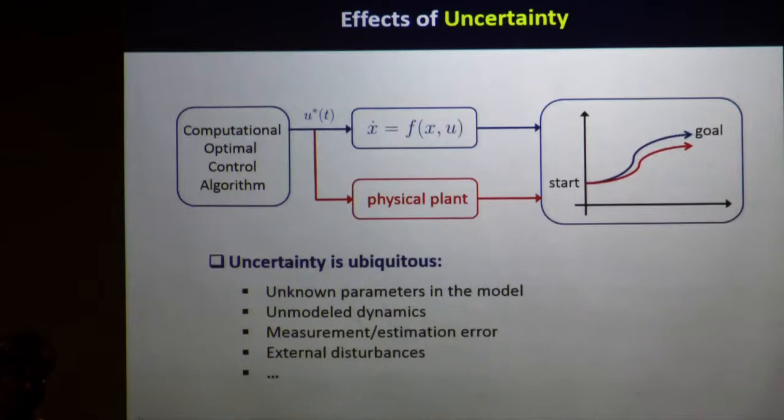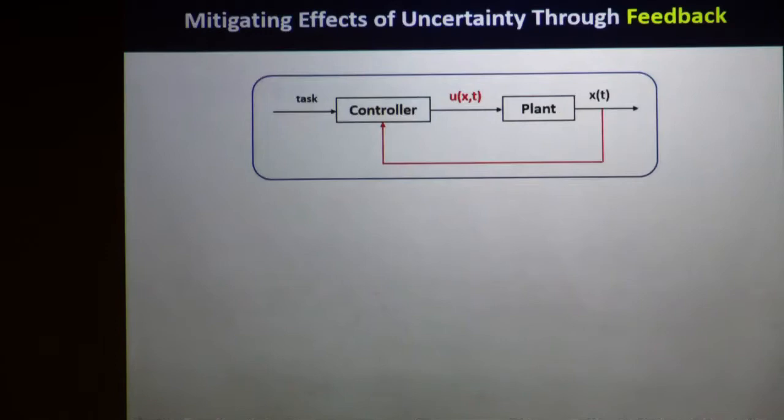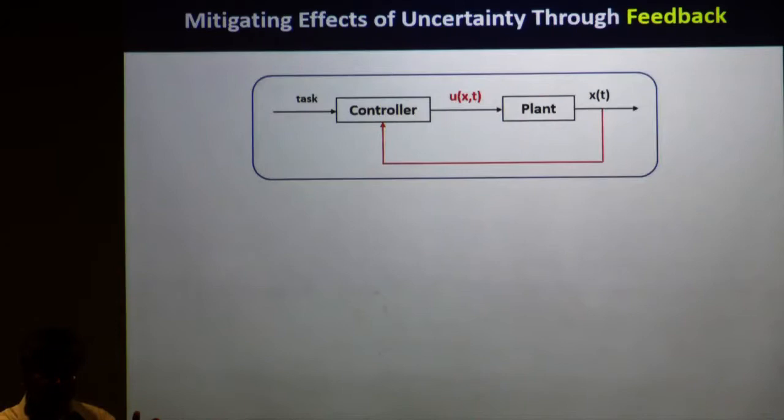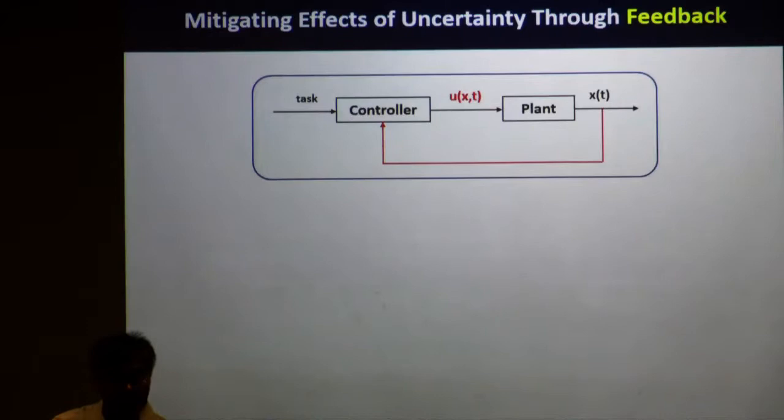From a control perspective, how do we mitigate this uncertainty? Since uncertainty is ubiquitous in any control system, the standard answer is to use feedback. Feedback basically means that at any time moment, you measure the state variable, and as your state deviates from your planned trajectory, you generate a new control signal. So your control signal is based on the current state variable — this is feedback, and it provides robustness to small disturbances and uncertainty.